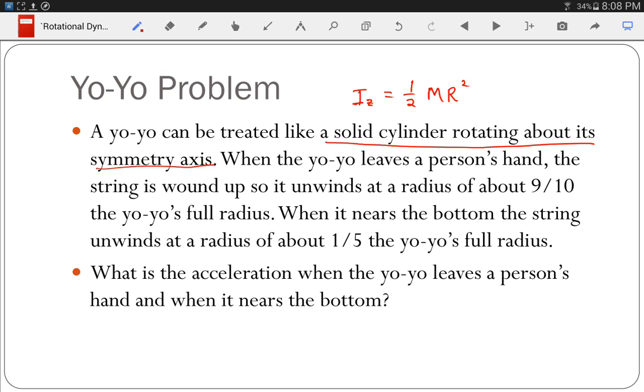When the yo-yo leaves the person's hand, the string is wound up so it unwinds at a radius of about nine-tenths of the yo-yo's full radius. So I'm going to say for the beginning part, the radius for the string is equal to nine-tenths the radius. At the end, you've unwrapped most of it and you're about one-fifth, so radius string final is equal to radius divided by five. Now my two questions are: what is the acceleration when the yo-yo leaves a person's hand, that is when it's unwinding at nine-tenths the radius, and what's the acceleration when it nears the bottom, when it's unwinding at one-fifth the radius.